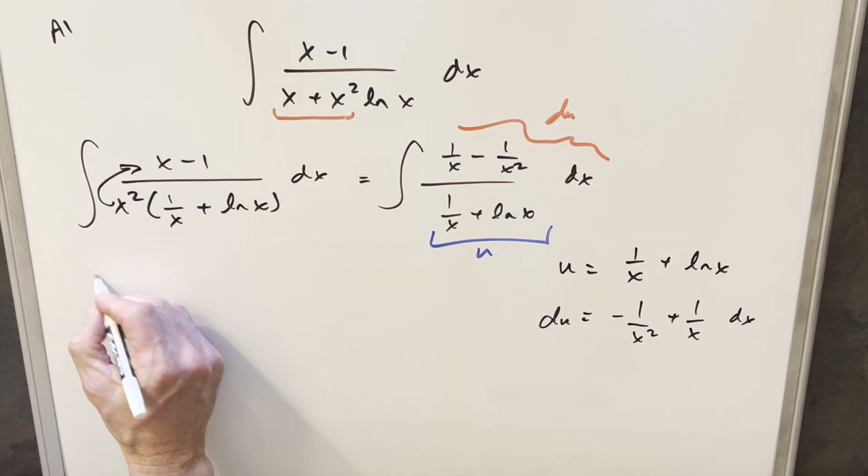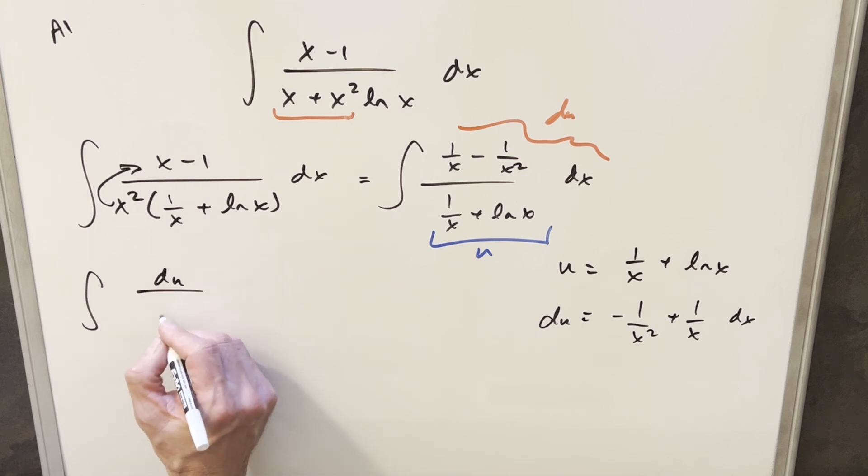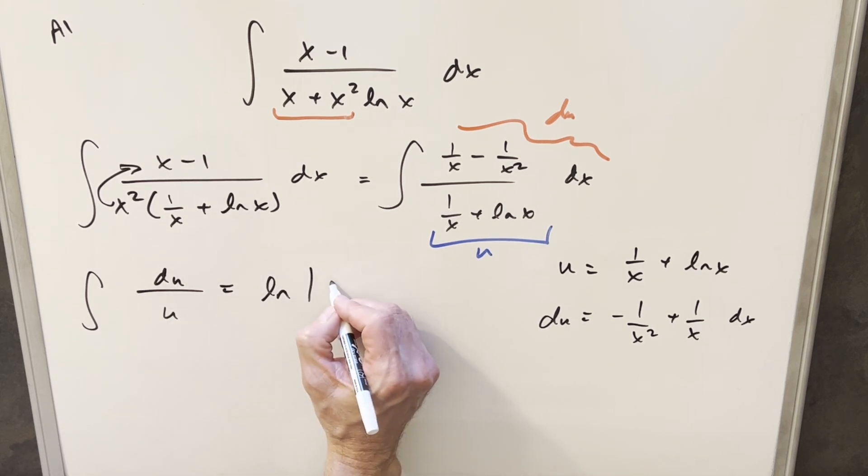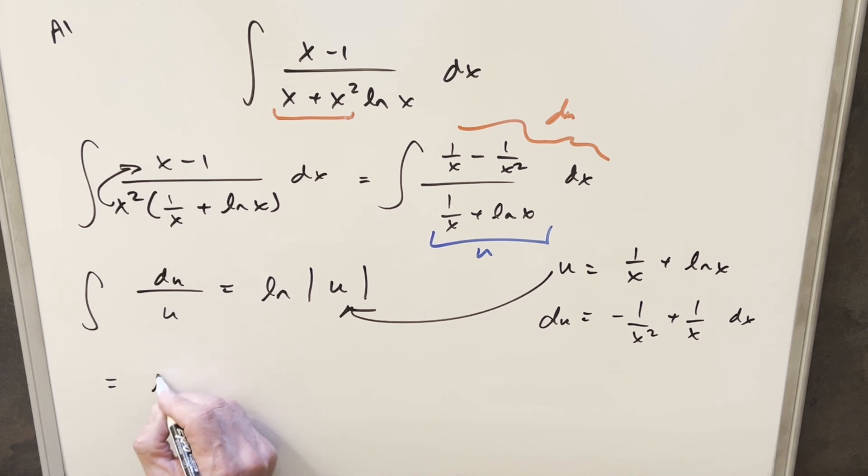So then we'll just go ahead and make the substitution and so we'll have in the numerator du and the denominator just u. We integrate this we get natural log absolute value of u, back substitute, and for the final solution we just have natural log absolute value 1 over x plus natural log x plus c and that's it.